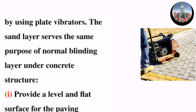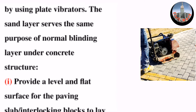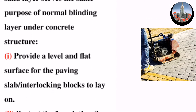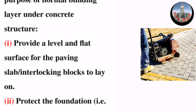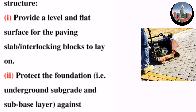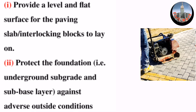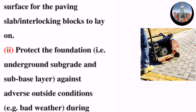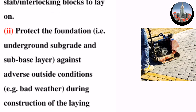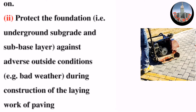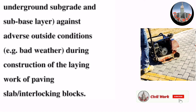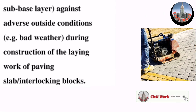The sand layer serves the same purpose as a normal blinding layer under a concrete structure: firstly, to provide a level and flat surface for the paving slab interlocking blocks to lay on; and secondly, to protect the foundation — that is, the underground subgrade and sub-base layer — against adverse outside conditions, for example bad weather during construction of the laying work.